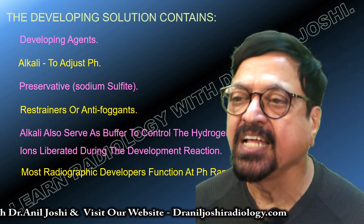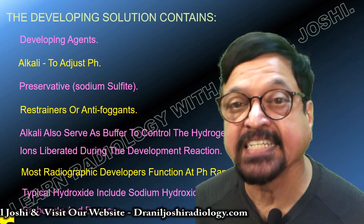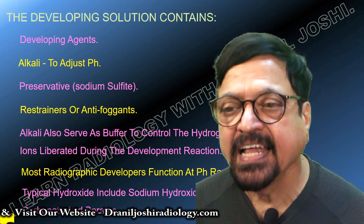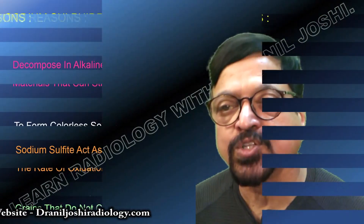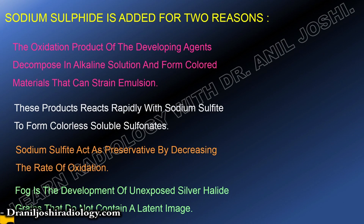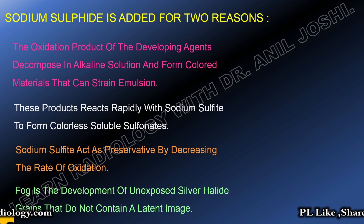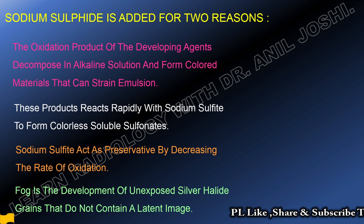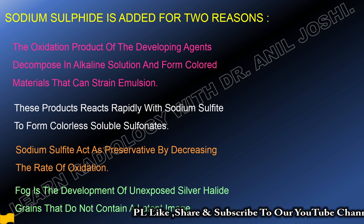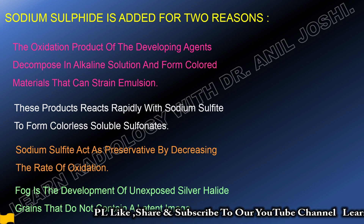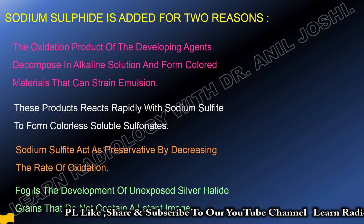Most radiographic developers function at a pH of 10 to 11.5 — that is alkaline pH. Typical hydroxides include sodium hydroxide, sodium carbonate, and borates; they are important to adjust the pH. The oxidation products of the developing agent decompose in alkaline solution and form a colored material that can stain emulsions, slowing or retarding the chemical reaction and causing discoloration on the film. This product reacts rapidly with sodium sulfite to form a colorless soluble sulfonate — otherwise developed films will look brown.